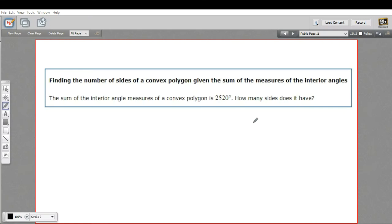In this problem, we are given the sum of the measures of the interior angles of a polygon, and we're being asked to determine how many sides it has. The sum of the interior angles of this polygon is 2,520°, and we're being asked how many sides does it have.